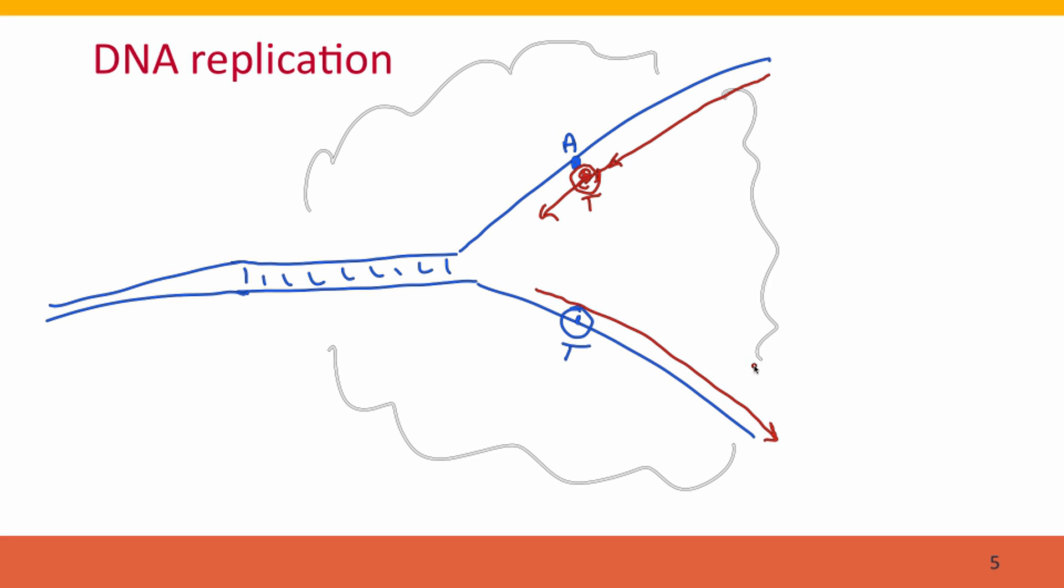The consequences of this for the relationship between the new molecules, what we call the daughter molecules, double-stranded DNAs, and the original parent molecule, is that the genetic information in the two daughter molecules is identical. So an A would be inserted here across from this T.